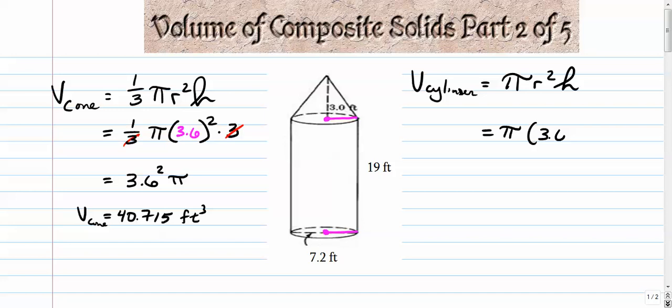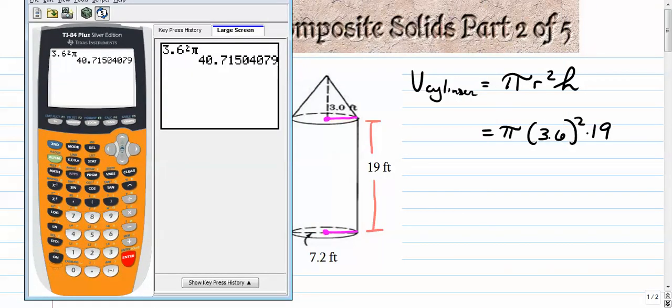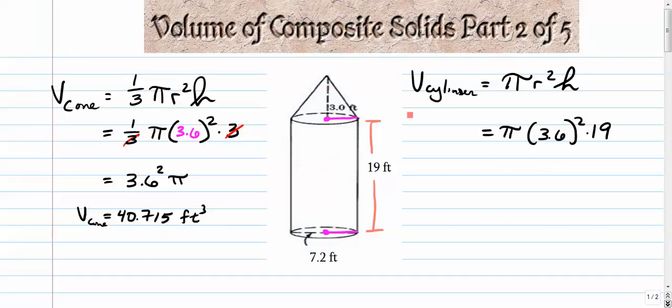Radius, again, is 3.6. The height of the cylinder, though, this time is 19. The height of the cylinder goes from here all the way down to here. So again, we're just going to get our calculator out and calculate 19 times pi times 3.6 squared. 773.586. That's volume of the cylinder.